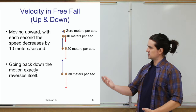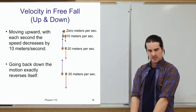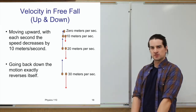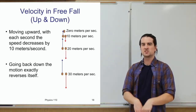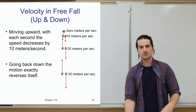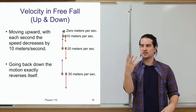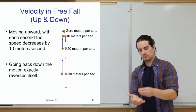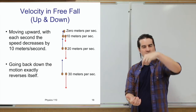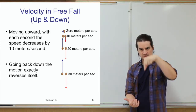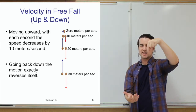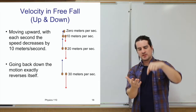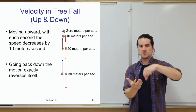Interestingly, gravity accelerates objects downward at 10 m/s per second whether it's speeding them up or slowing them down. If you toss an object upward, gravity is acting against the motion — that's deceleration. The acceleration is still 10 m/s per second, but now it's reducing the speed rather than increasing it.